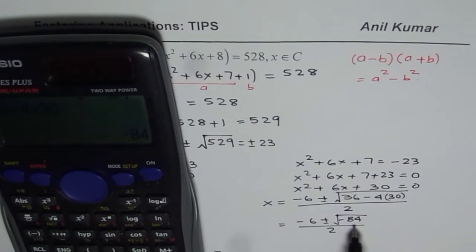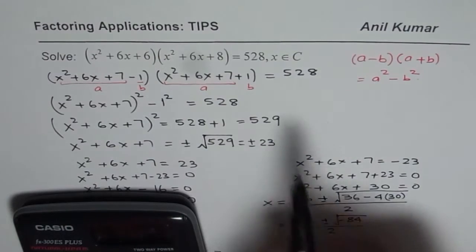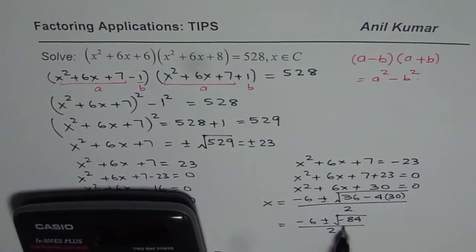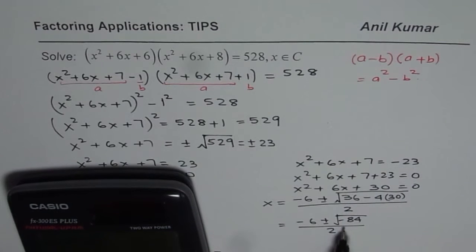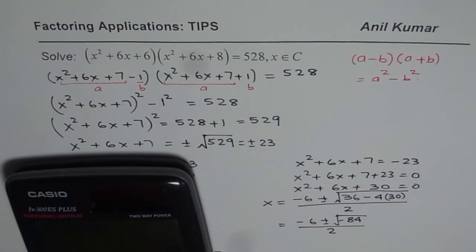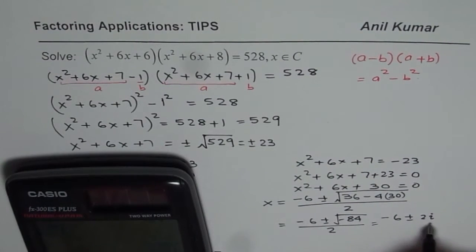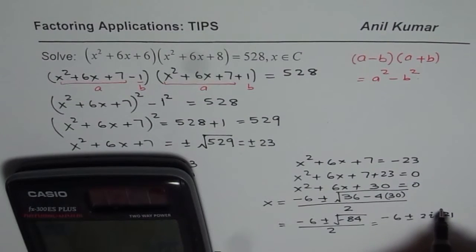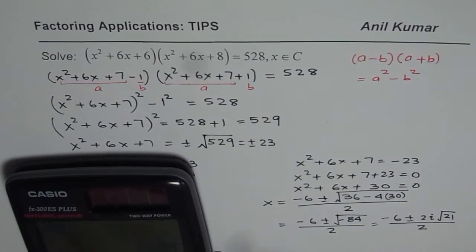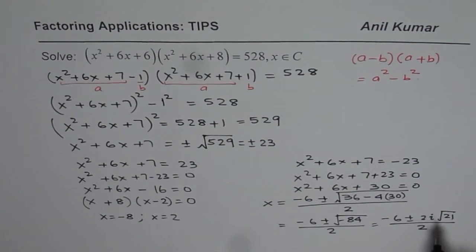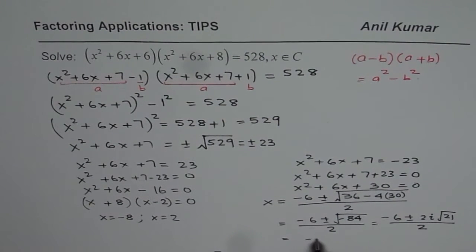The square root of minus 84: if working in the domain of real numbers there is no solution, but in complex numbers we do have a solution. We write minus 84 as minus 4 times 21, so the square root gives us 2i times square root of 21. Thus x equals minus 6 plus or minus 2i root 21, all divided by 2, which simplifies to minus 3 plus or minus i square root 21.